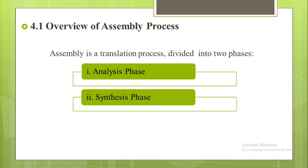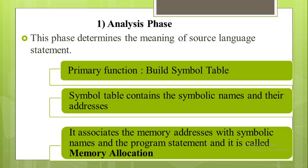In the design of an assembler, first we will see the overview of the assembly process. Assembly is a translation process divided into two phases: the first phase is called the analysis phase and the second is called the synthesis phase. The analysis phase determines the meaning of source language statements. The primary function of the analysis phase is to build the symbol table, which contains symbolic names and their addresses, associating memory addresses with symbolic names — this is called memory allocation.